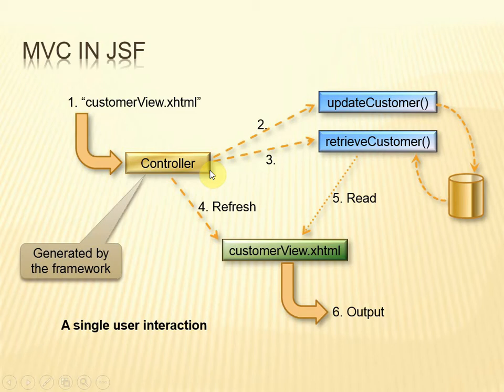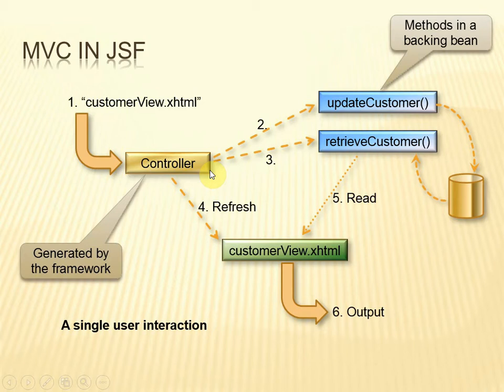That controller will invoke the model components — we'll talk about how that magic works in a bit — and then, having invoked the model components, it will invoke the view component, and the data produced by the model will be used by the view. The model is no longer a servlet or POJO but a backing bean, and we'll see in a minute how that is done.